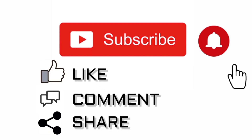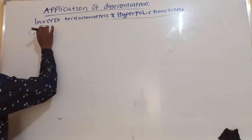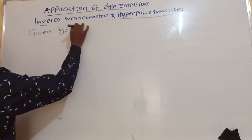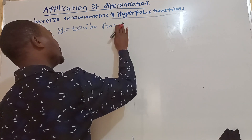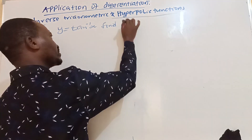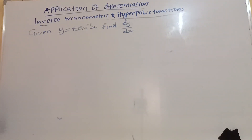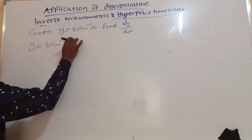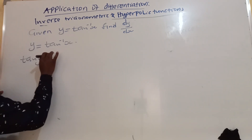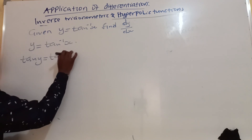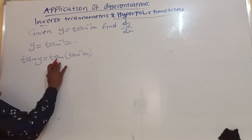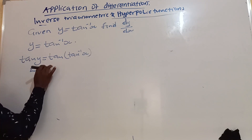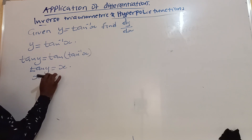I hope by now you have an identity we can use. Given y = tan inverse x, find the derivative of y with respect to x. We know y = tan inverse x. Apply the cancellation equation: tan y = tan(tan inverse x). The tan function cancels out the tan inverse function, so tan y = x, or x = tan y.